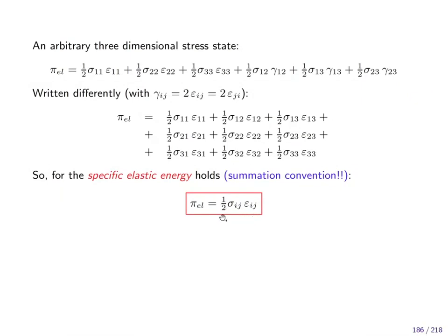Some terms appear twice due to symmetry, but writing it this way makes the index notation summation more evident. The specific energy remains a stress-strain multiplication, the one-half remains as in the simple example. If we talk about the 1-1 component only, sigma_11 and epsilon_11 reproduce what we had before for the stretched bar. Now we have it for the general case for any type of stress and strain — the total energy needed to deform an object.